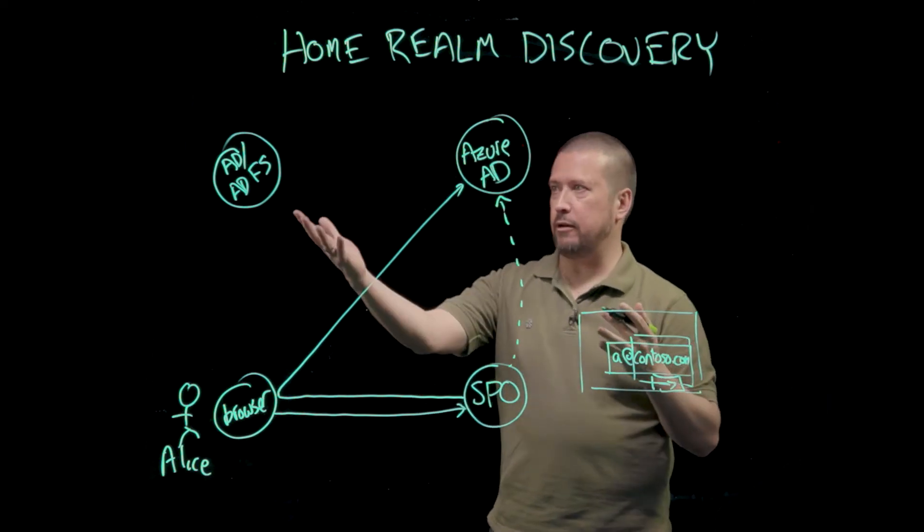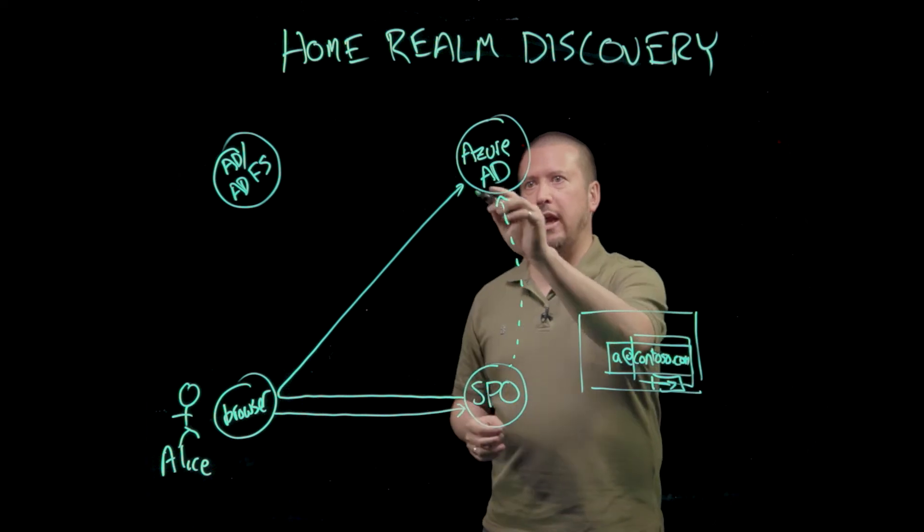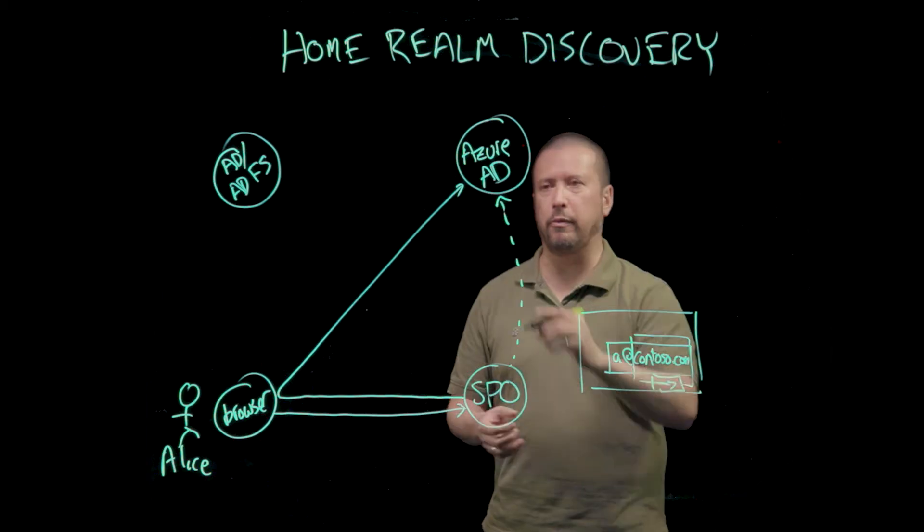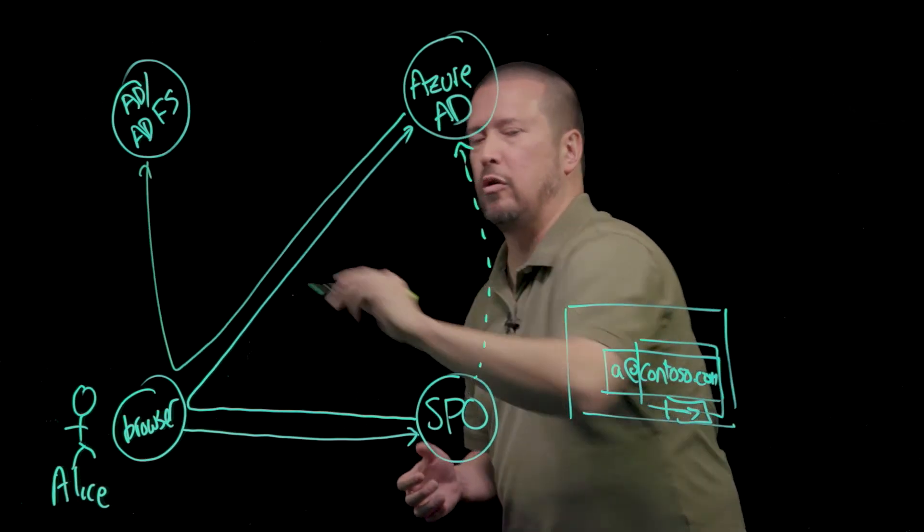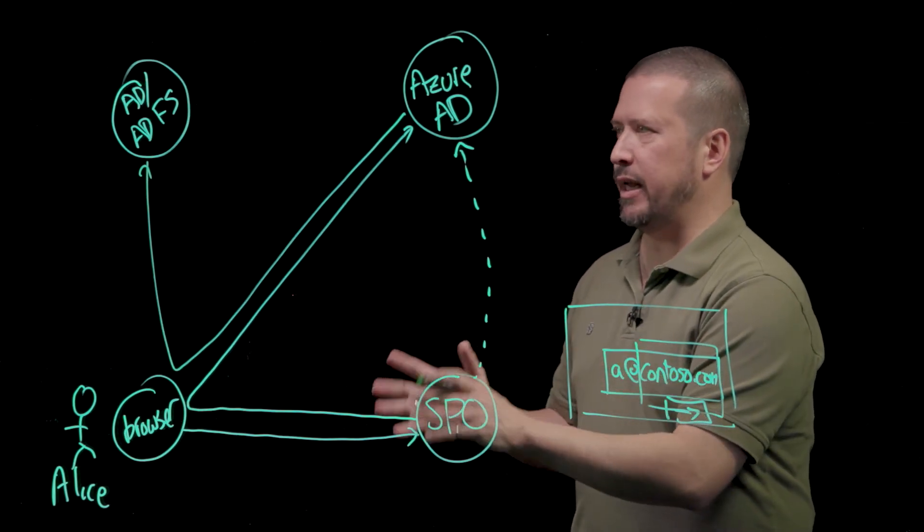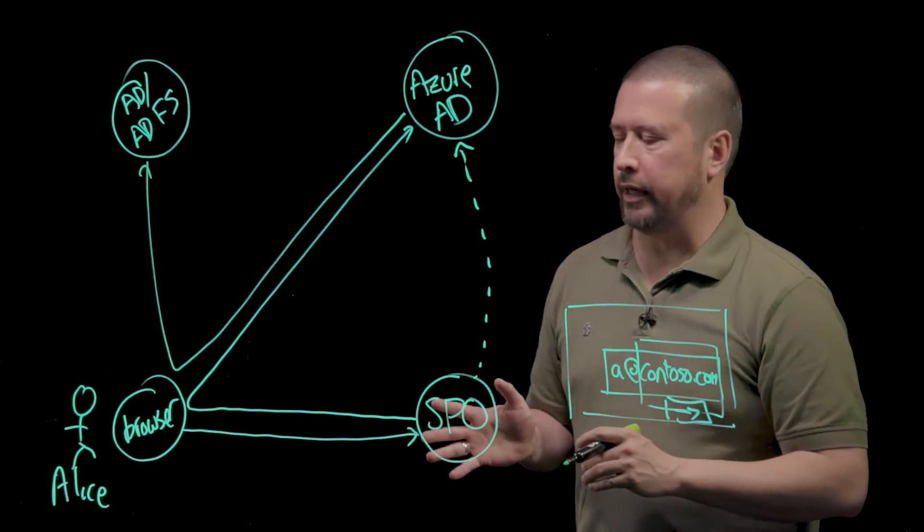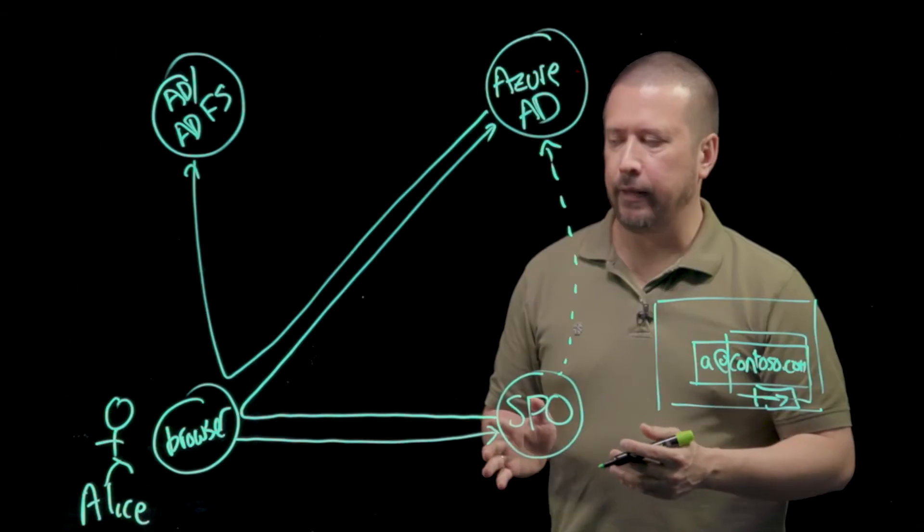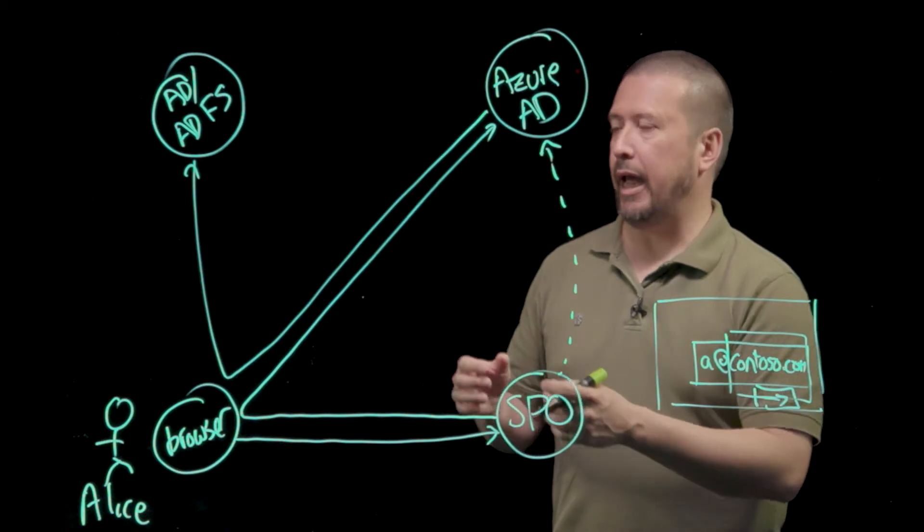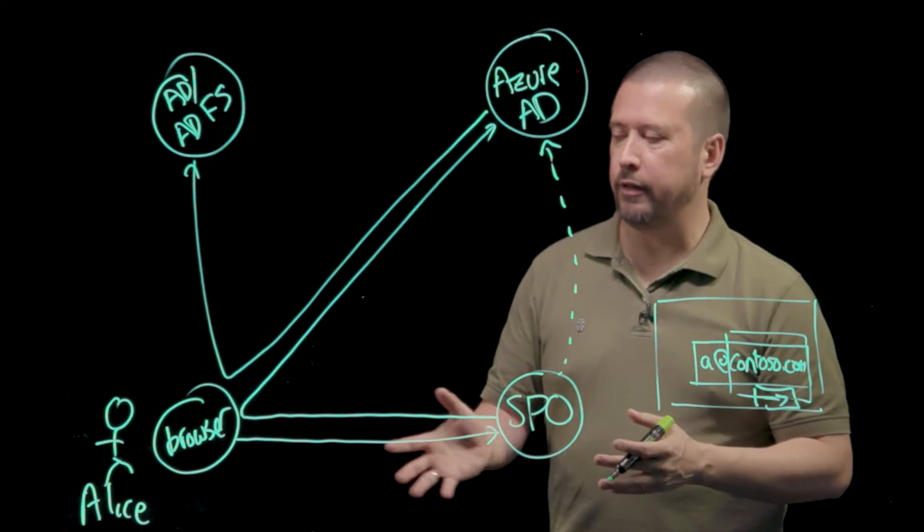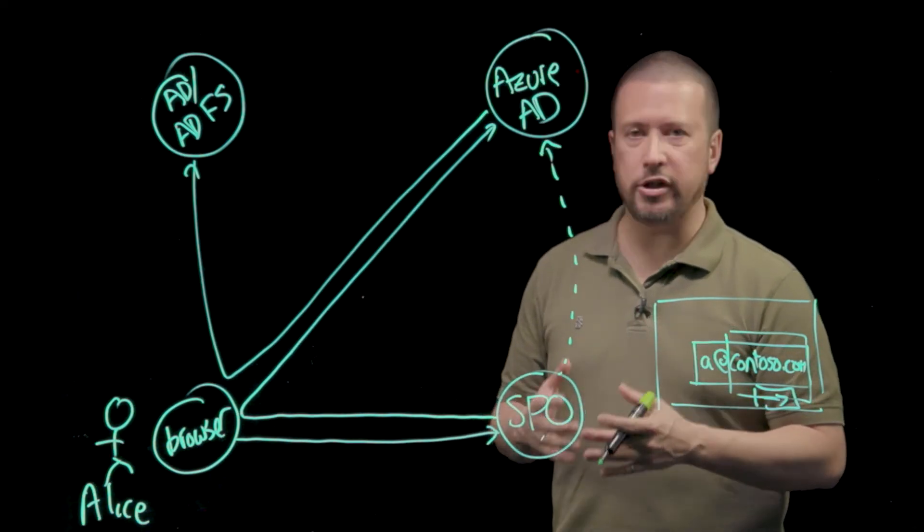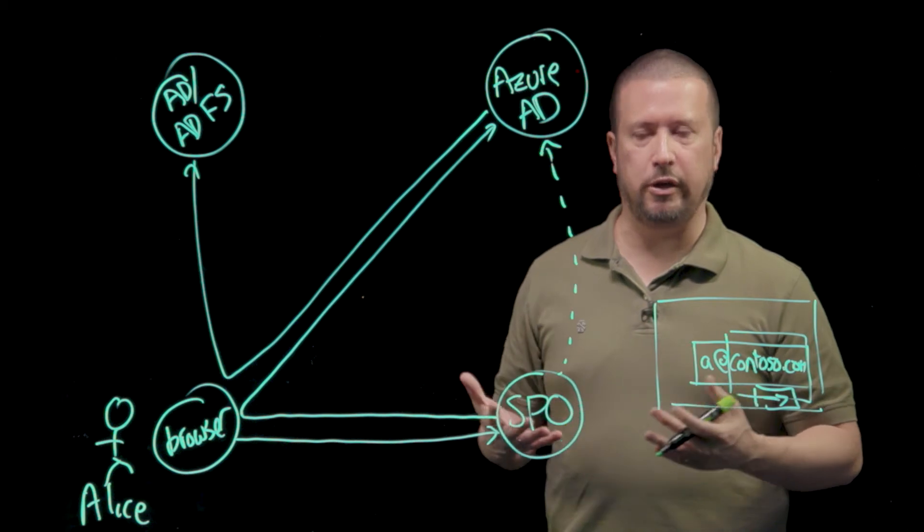We now know we need to send her to that ADFS server. What Azure AD does is it again issues a sign-in request through Alice's browser in the form of a redirect to get her authenticated with her ADFS server. How that happens is a matter between Alice and her ADFS server. It could be a name and password she enters in a form. If she's using a domain-joined machine on the corporate network signed in with her domain account, then maybe that authentication with the ADFS server can be a Kerberos authentication, in which case she doesn't need to present any credentials.